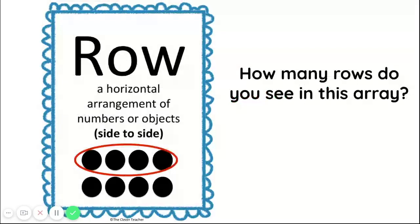Arrays have rows, which are horizontal arrangements of numbers or objects. Rows go side to side in an array. How many rows do you see in this array? We have two rows in this array. The first one is circled in red and the second row is right under it, with four objects in that row.